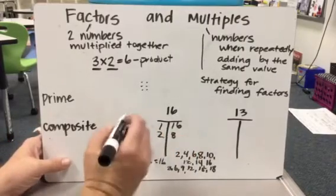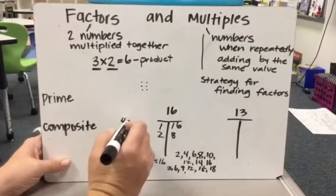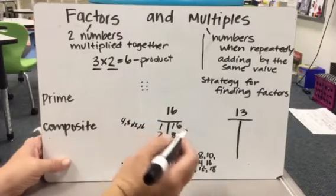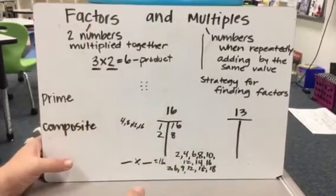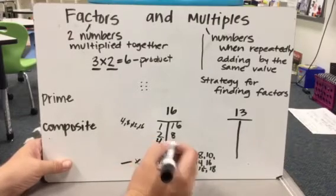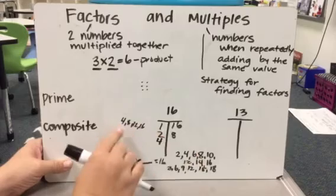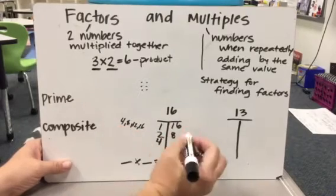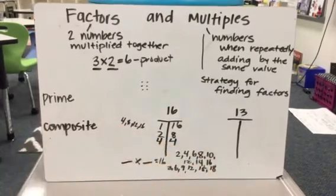Let me try 4 over here. So I have 4, 8, 12, 16. I landed right on it. So that means 4 is a factor of 16. So I could have 4 is a factor. And how many 4's did I need? I've used 4 groups of 4. So it's 4 groups of 4.